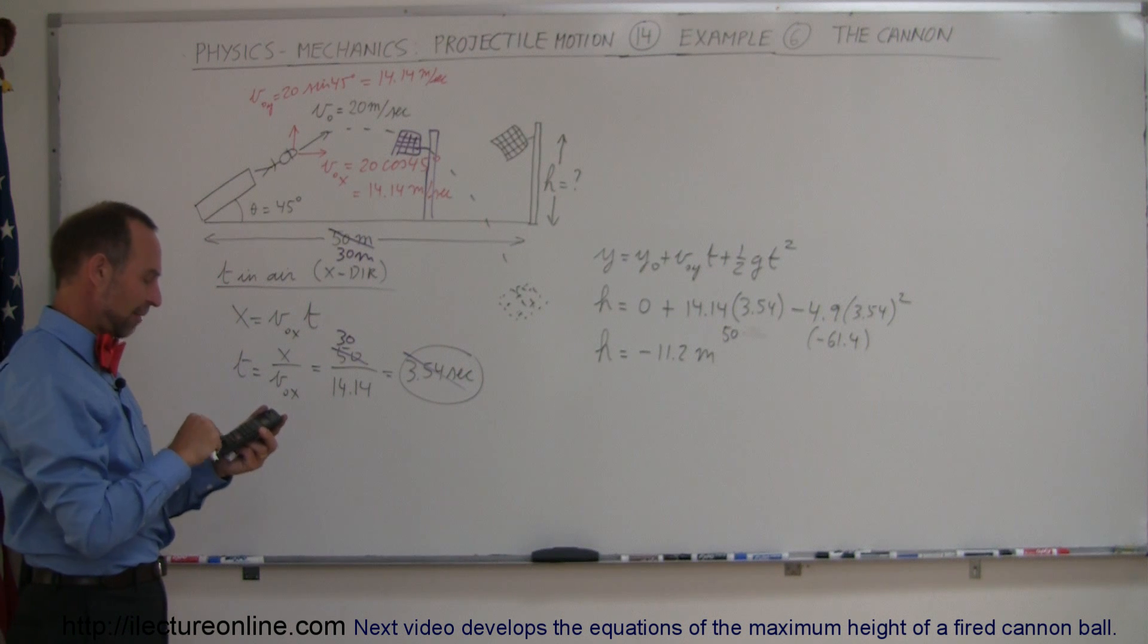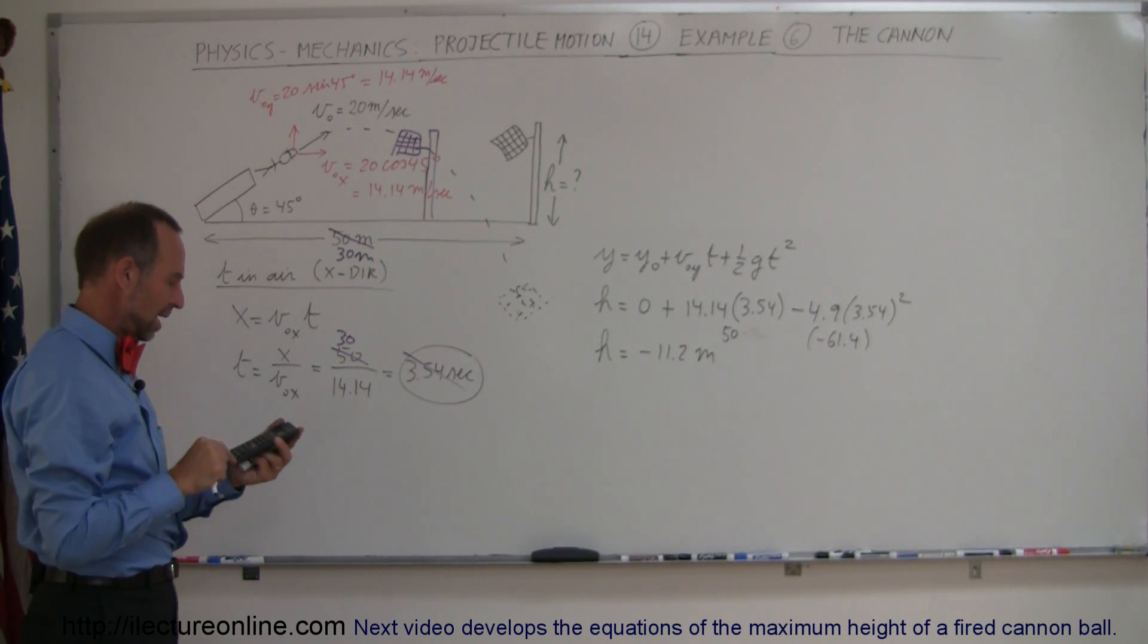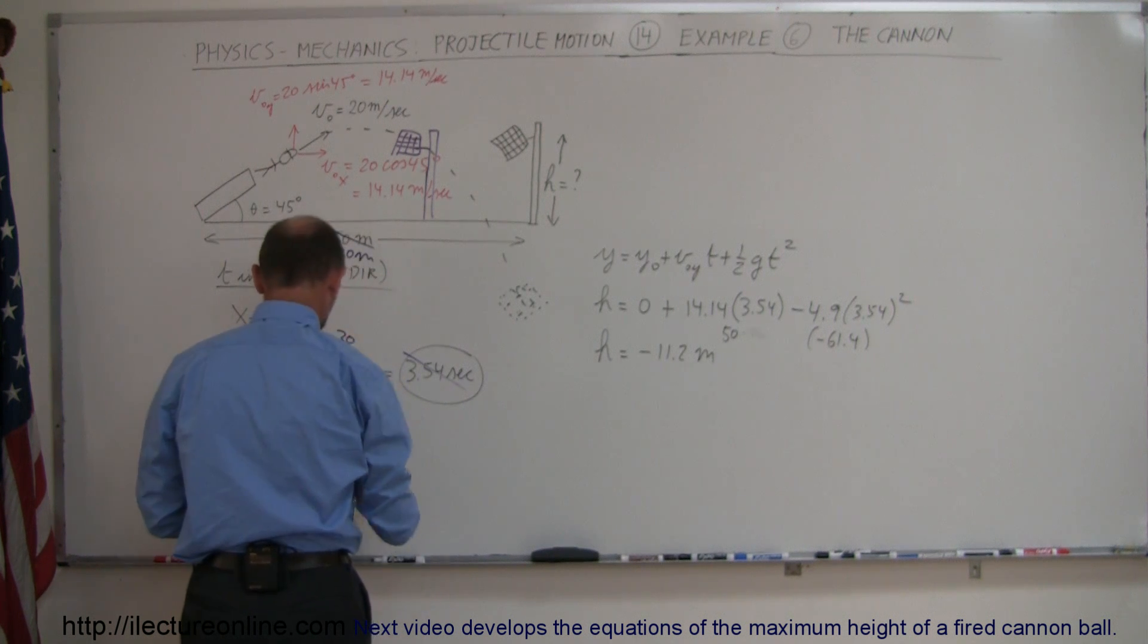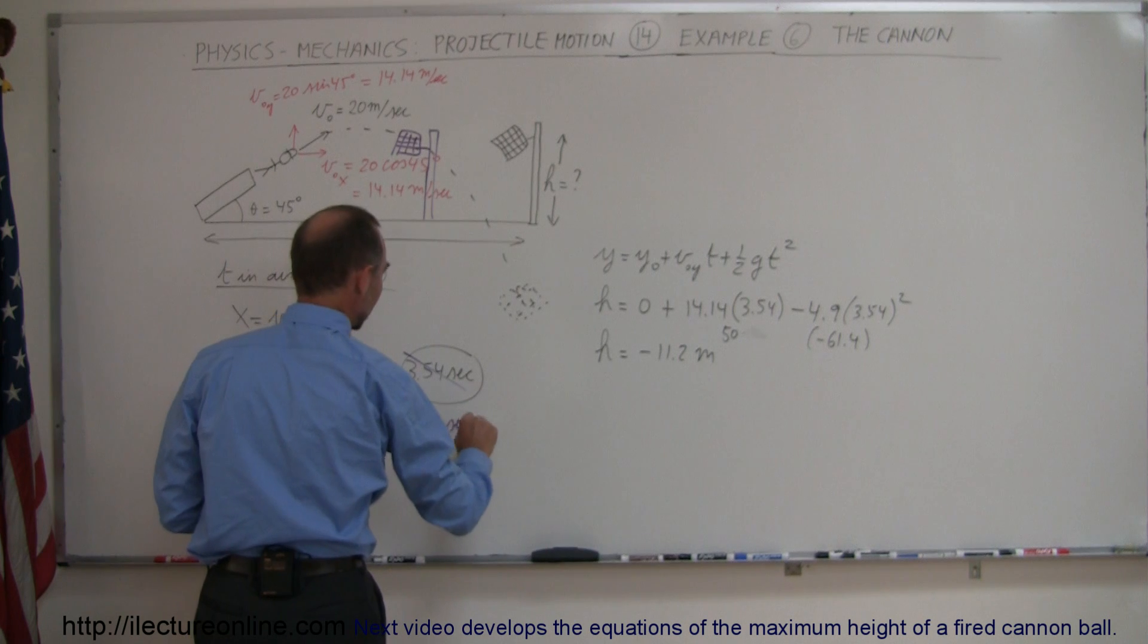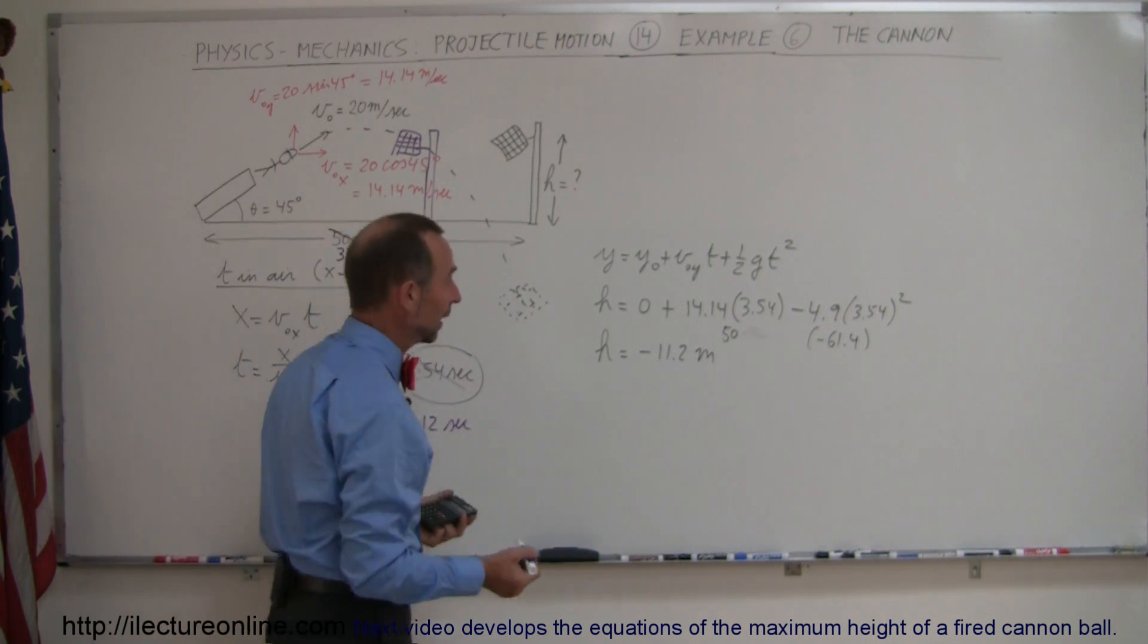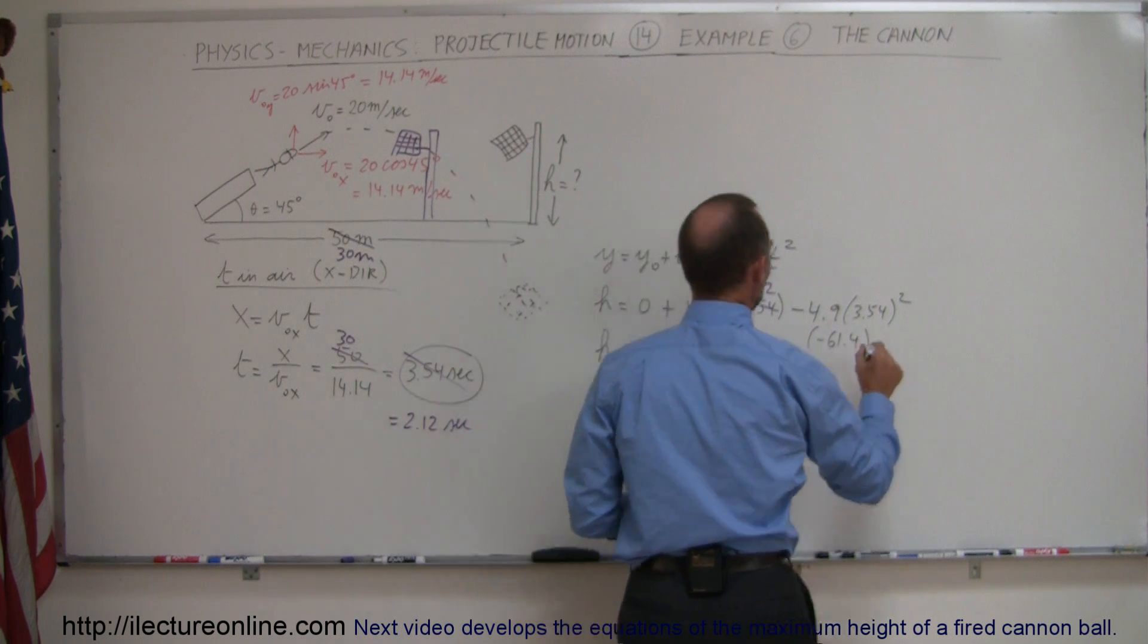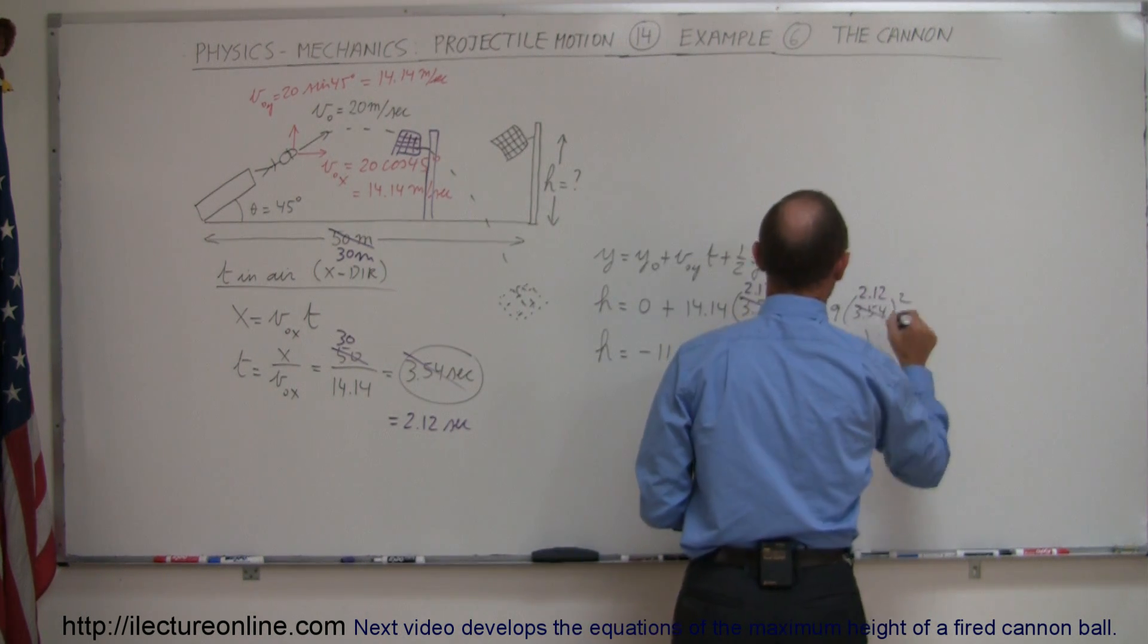So we have 30 divided by 14.14, and that would be 2.12 seconds. So now the new time would be 2.12 seconds. And then we come over here, and we make this 2.12, and we make this 2.12, and see if we get a better situation.